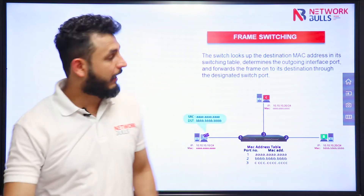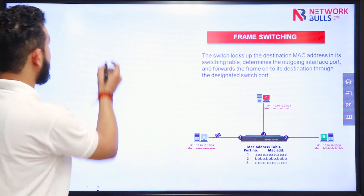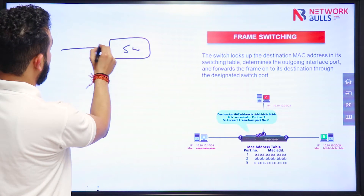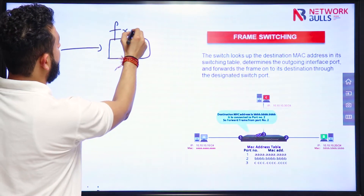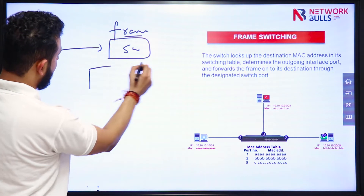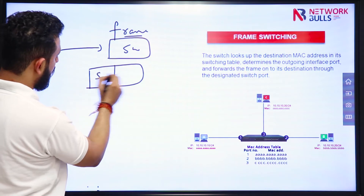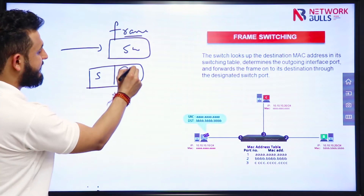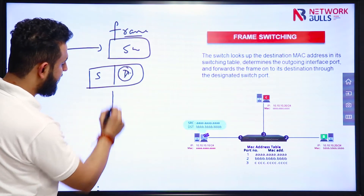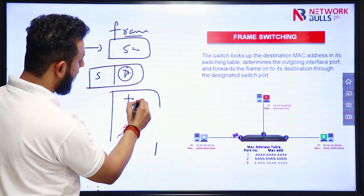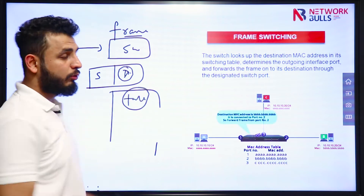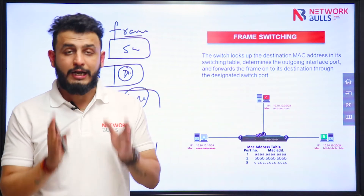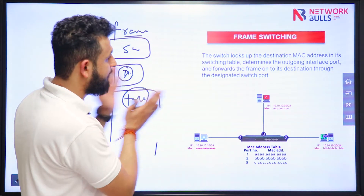So what is frame switching? Whenever a switch will receive a frame — let us say this is a switch and it is receiving some frame — how will it forward the frame? To forward the frame, in the frame there will be two MAC addresses: one will be source and the other will be destination. So it will check the destination MAC address in its MAC address table, and to the port to which that particular MAC address is connected, the device will send the information.